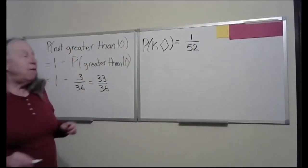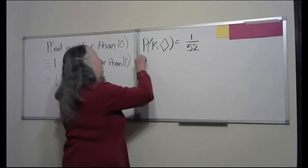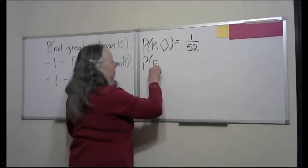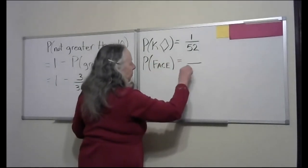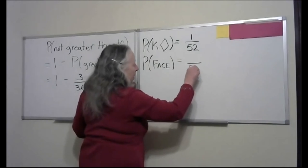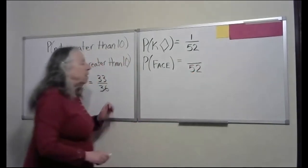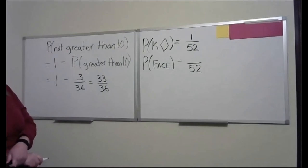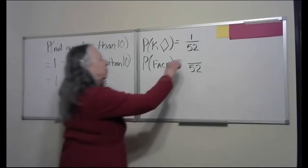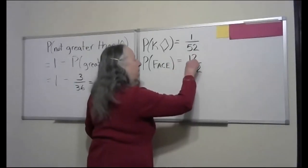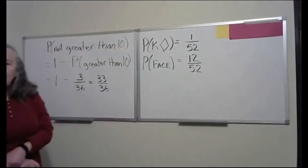Next, a face card. Denon, how many elements are in the event 'face card'? Twelve.